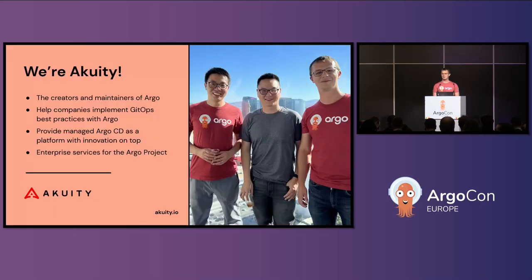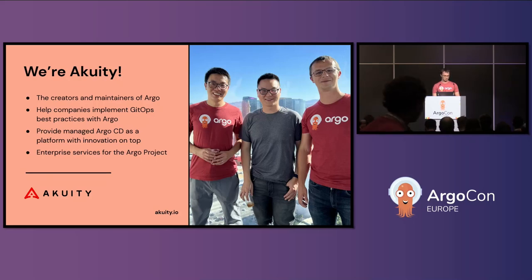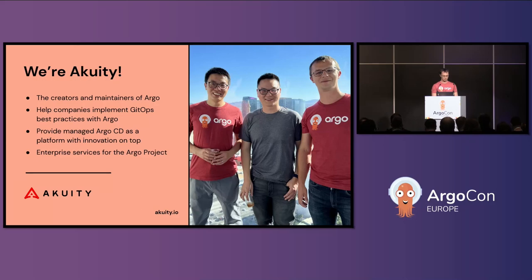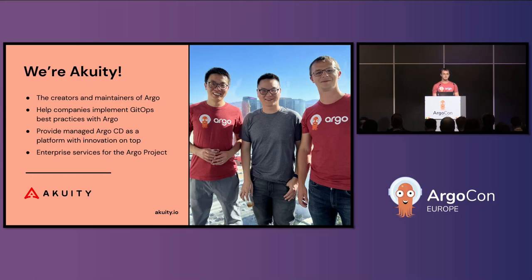Let me do a proper introduction. My name is Alexander Matyushentsev — don't try to repeat my last name. I prefer to go by Alex, and I'm a longtime maintainer of Argo. I've been working on this project for almost seven years. I'm part of the team that created the project — you can see it on the screen: Honk, Jesse, and me. We've been helping enterprises adopt GitOps and maximize the benefits of Kubernetes for many years, which led to the creation of the project and eventually our company, Acuity. We're helping enterprises adopt GitOps using Argo, and we're scaling this with a SaaS product called Acuity Platform, which includes managed Argo CD and a ton of innovation on top.